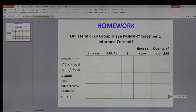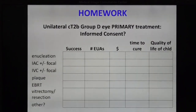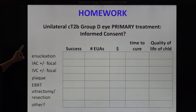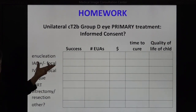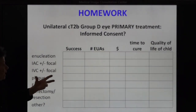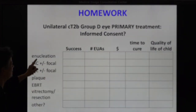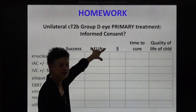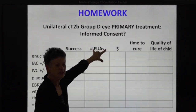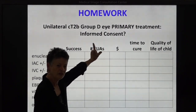So this is the homework. I can pick as an example a unilateral CTTV, group D, for the primary treatment. What do you need to tell the parents in order to make their consent for the treatment of that child truly informed?